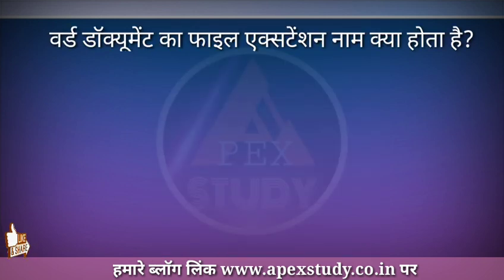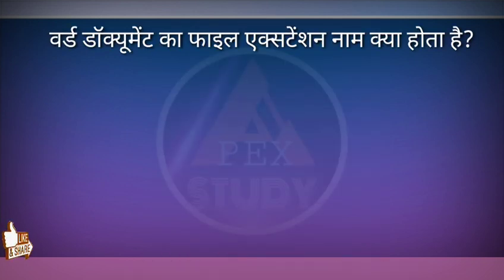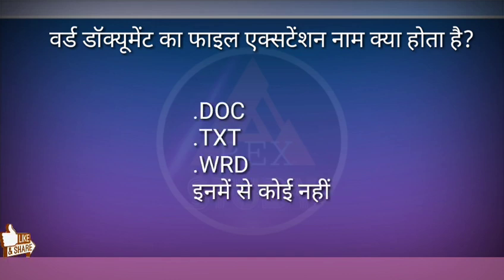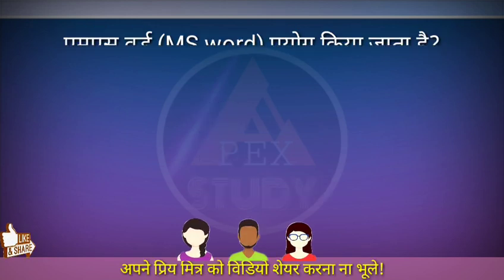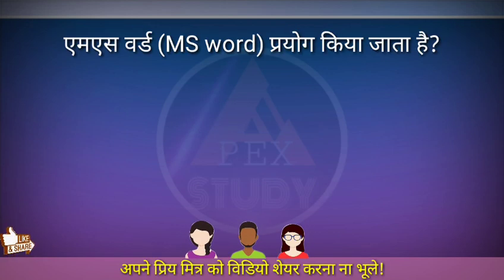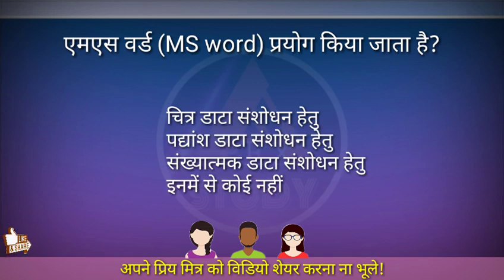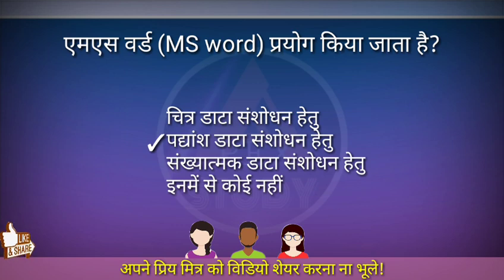अगला प्रश्न: Word document का file extension क्या होता है? Options: .doc, .txt, .wrd, इनमें से कोई नहीं। Document के लिए .doc होता है। अगला प्रश्न: MS Word किसके लिए प्रयोग किया जाता है? Options हैं: चित्र डेटा संशोधन, पाठ्यांश डेटा संशोधन, संख्यात्मक डेटा संशोधन, इनमें से कोई नहीं। MS Word का प्रयोग text या पाठ्यांश डेटा संशोधन के लिए होता है।